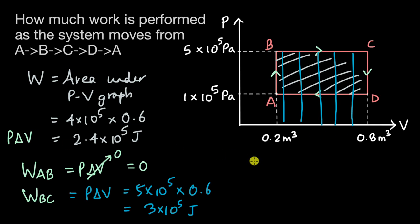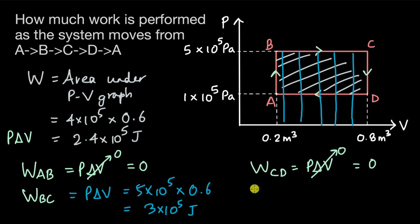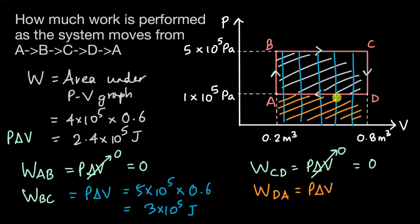For process CD, again P·ΔV — delta V is really 0, there is no change in volume. So this work is 0. And finally, for process DA, work is P·ΔV. The area under this curve gives us 1×10⁵ pascals times minus 0.6, because the final volume is 0.2 and initial is 0.8, so 0.2 minus 0.8 equals minus 0.6 m³. This comes out to be minus 0.6×10⁵ joules.